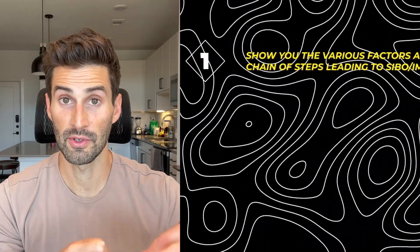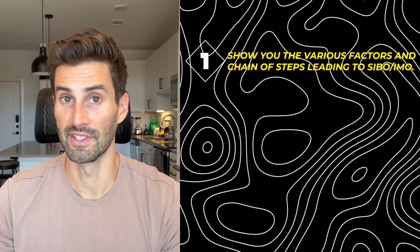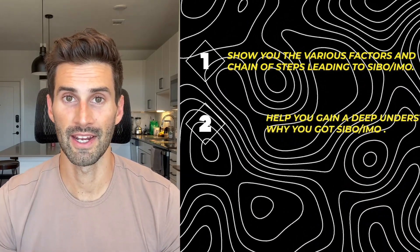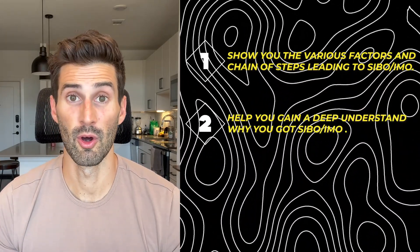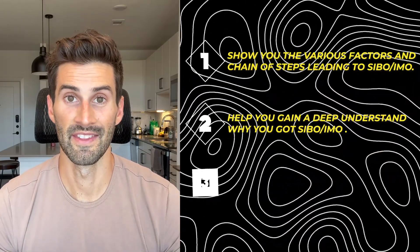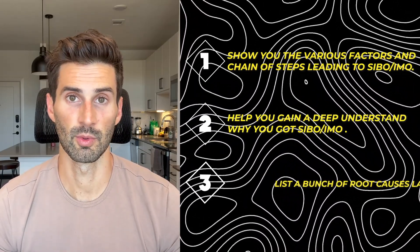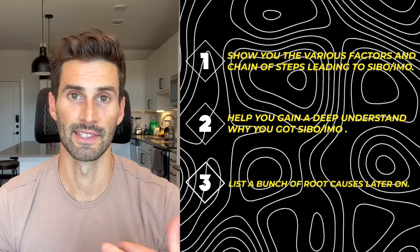There are still a lot of people that get SIBO, get rid of it, and then get it again, and unfortunately never end up really resolving it because they haven't been exposed to the big picture of what's actually going on. The purpose of this video is: number one, to show you the various factors and chain of steps that actually lead to SIBO; number two, help you gain a deep understanding of why you actually got SIBO or IMO — intestinal methanogen overgrowth — and then hang around towards the end because we're going to list a bunch of root causes later on.